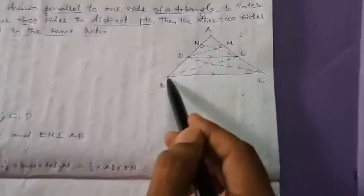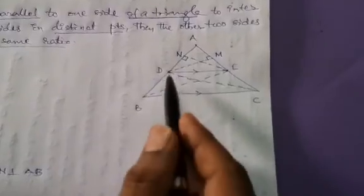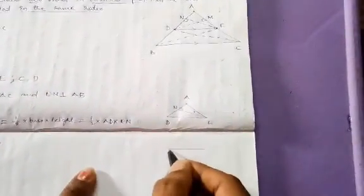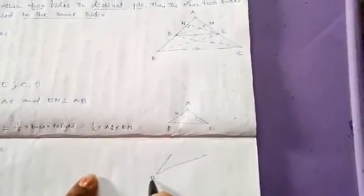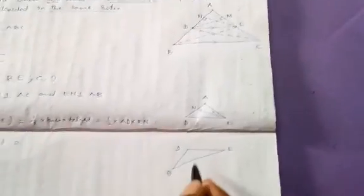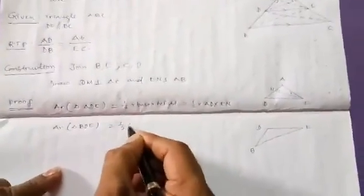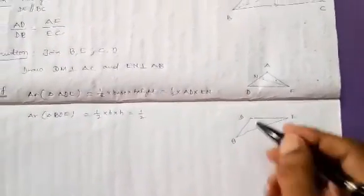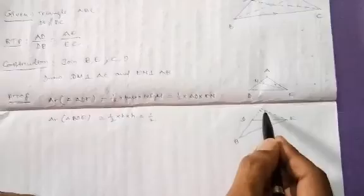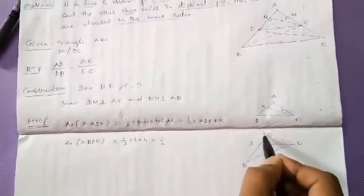Now I am finding the area of triangle BDE. For convenience I am drawing triangle BDE. The area formula is half times base times height. Here EN is extended as a perpendicular to line BD. So EN is the height and DB is the base, giving: area of BDE = half × DB × EN.